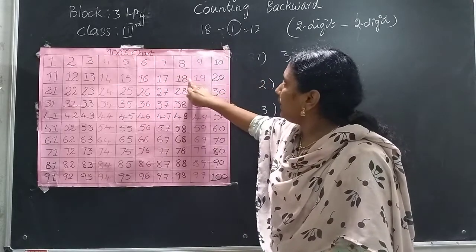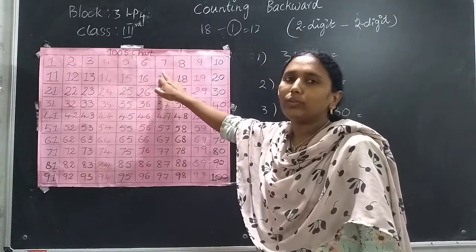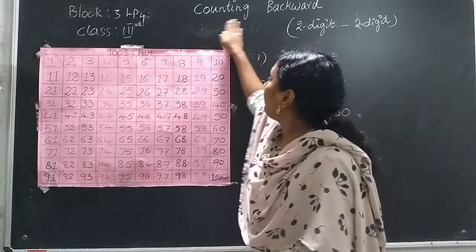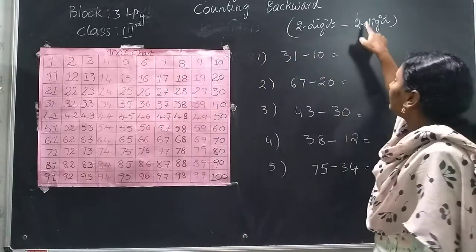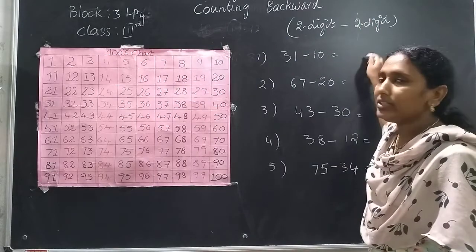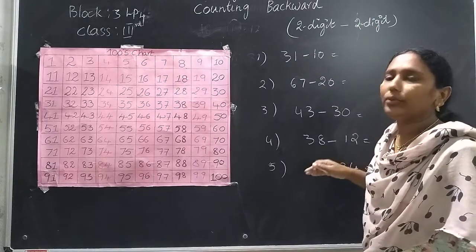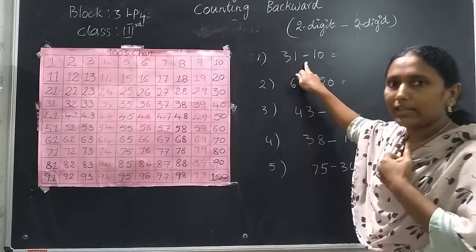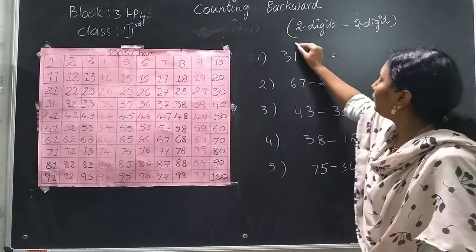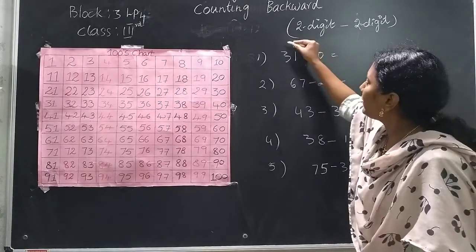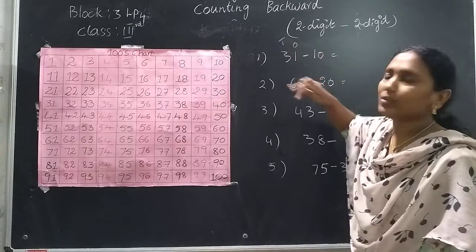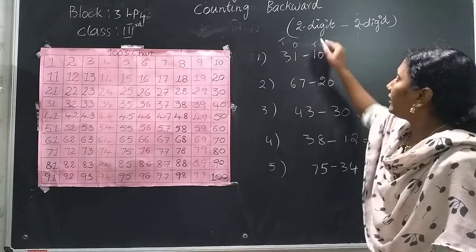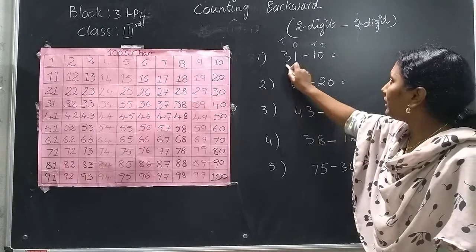From 18, move 1 step backward to reach 17. Today we will see 2-digit with 2-digit. For example, there is a number 31 minus 10. What do I have to do? I have to first identify the 1's place and 10's place values. Here also 1's and 10's. We have to take the bigger number.